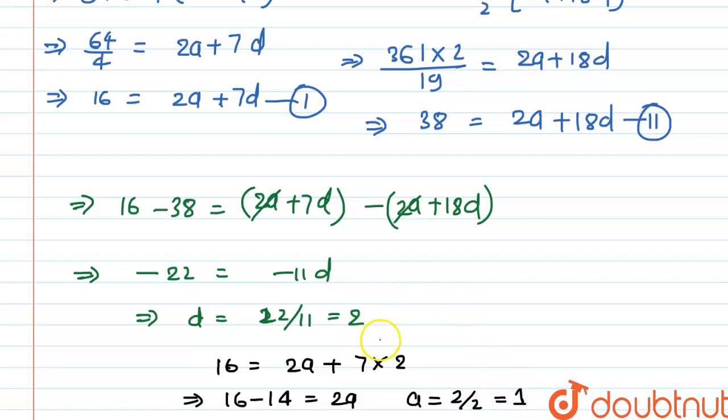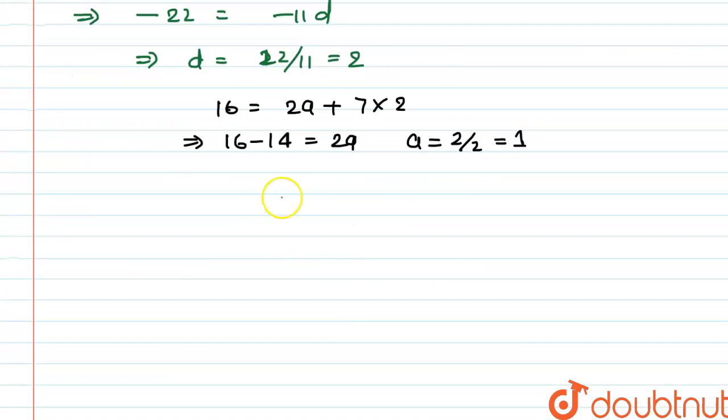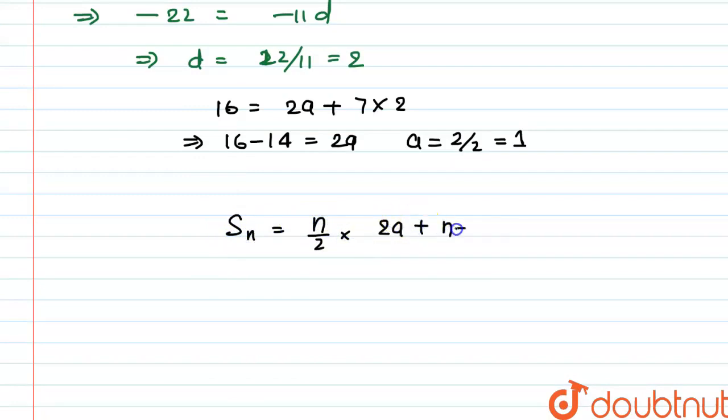So the first term of this AP will be 1 and common difference, that is D, is equal to 2. So the Sn will be, that is sum of n terms, will be equal to n by 2 into 2a plus n minus 1 into D. And here a is equal to 1, so n by 2 into 2 plus nD will be 2.